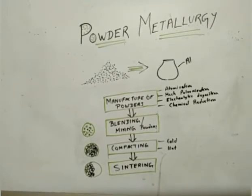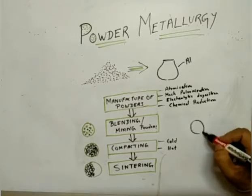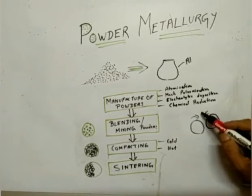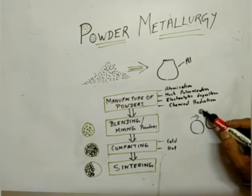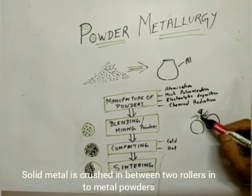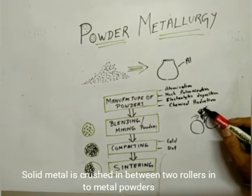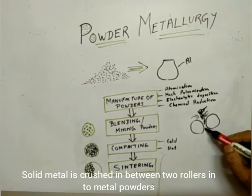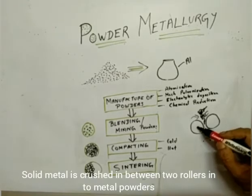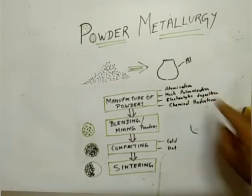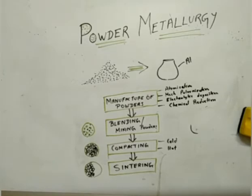The second method is mechanical pulverization, which involves crushing metallic powders using mechanical methods. One easy way is to have two rollers rotating in opposite directions — similar to what we have seen in rolling. The aluminum material is poured between the rollers, and due to the crushing action we get metallic powders.